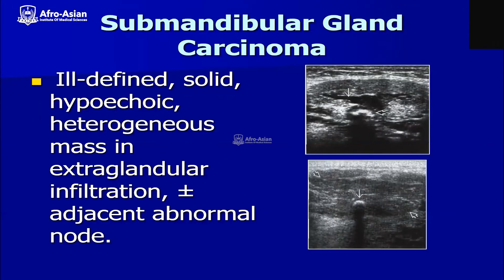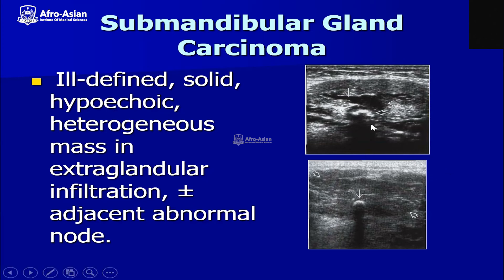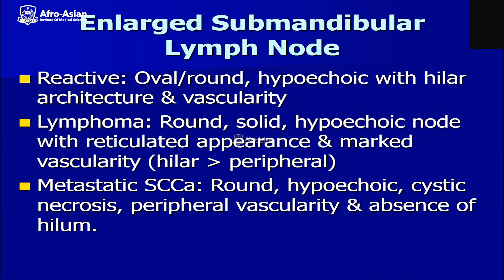Submandibular gland carcinoma is very common. Whenever a mass is present, it appears as an ill-defined, solid, hypoechoic, heterogeneous mass with extraglandular infiltration. Plus or minus adjacent abnormal lymph nodes may be seen. In submandibular carcinoma, calcification can sometimes be found, even in the duct — presenting as a stone in the duct of the submandibular gland. Large submandibular lymph nodes with inflammation or carcinoma may show reactive, oval to round, hypoechoic nodes with altered architecture and vascularity.